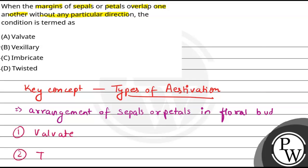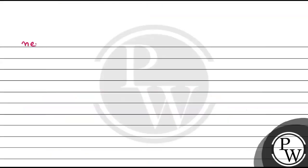The second type is twisted aestivation. In twisted aestivation, one margin of an appendage overlaps the next, and the petals or sepals overlap in a particular regular pattern.